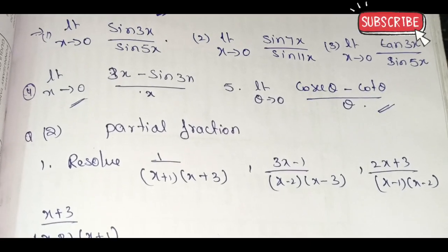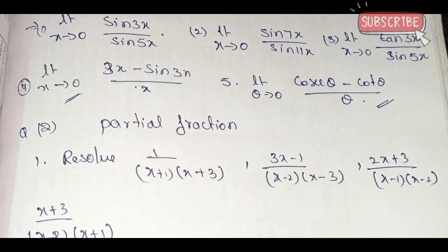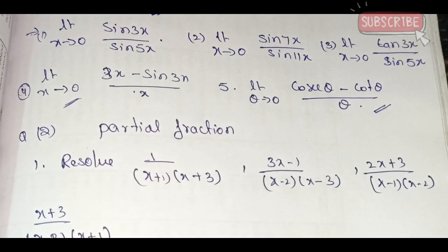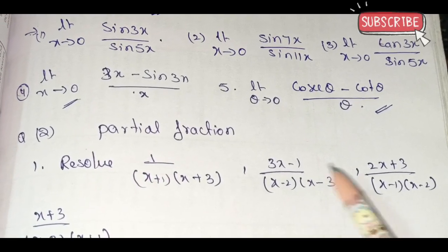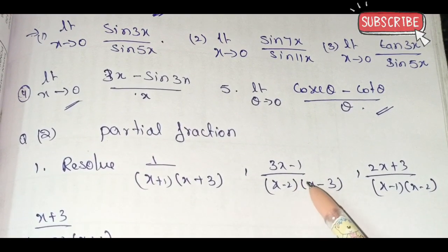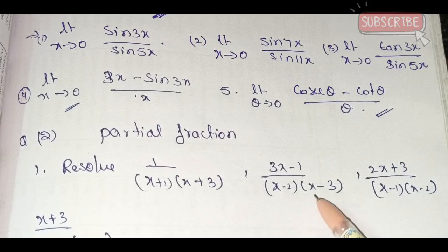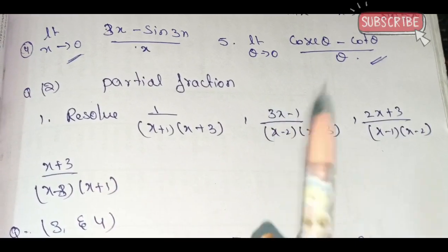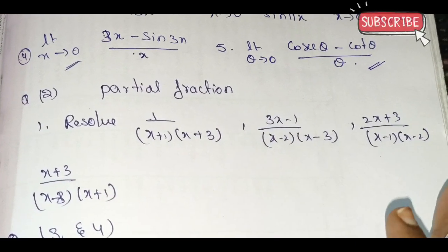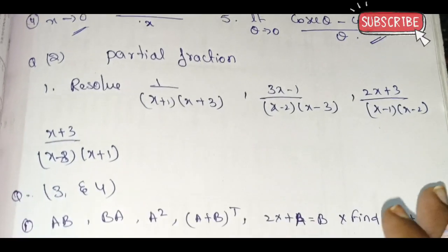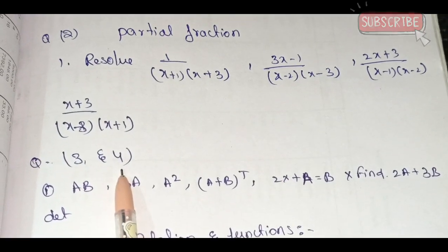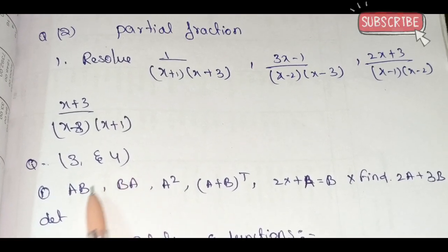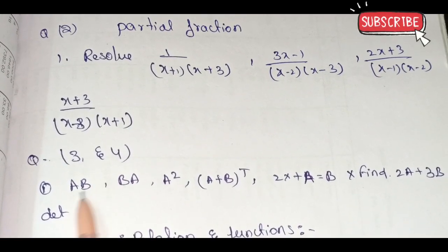Next, second question — partial fractions is very easy. The models are: 1 by (x+1)(x+3), and 3x minus 1 by (x minus 2)(x minus 3). These are the models — choose different models.